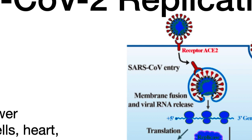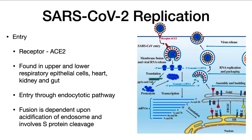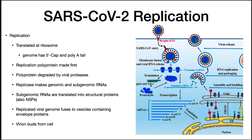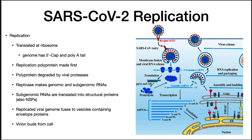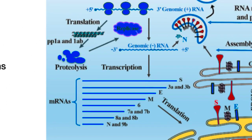Once the SARS-CoV-2 binds, the virus is taken into the cell by the endocytotic pathway. Entry of the virus into the cytoplasm is dependent upon acidification of the endosome, which involves spike protein cleavage and a conformational change. A membrane fusion between the viral envelope and the endosome occurs, and the nucleocapsid then enters the cytoplasm. After entry of the single-stranded RNA into the cytoplasm, it heads to the ribosome. The viral genome has a 5' cap and a poly-A tail, so it looks like a messenger RNA.